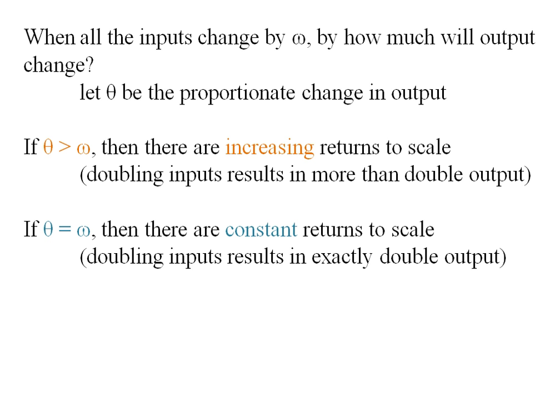If theta and omega are equal, we say it's constant returns to scale. So for example, if I double my inputs, I'll get exactly double the output.